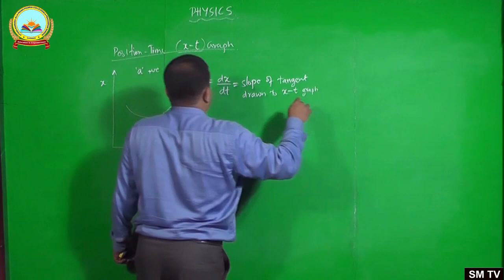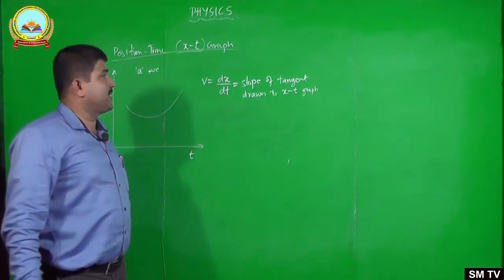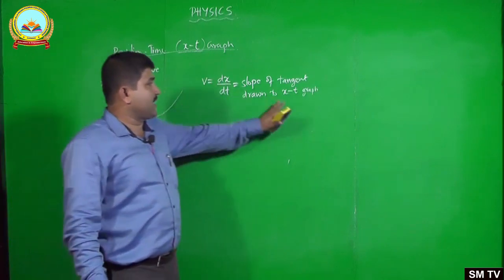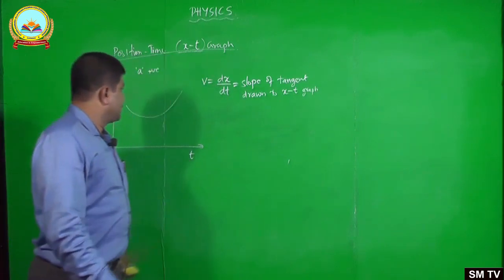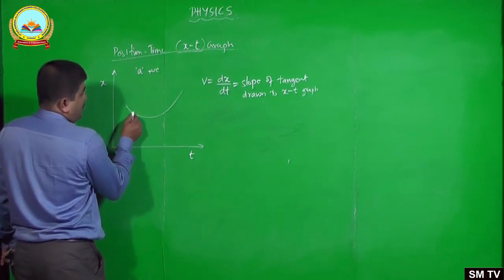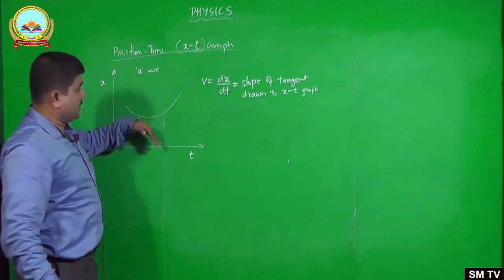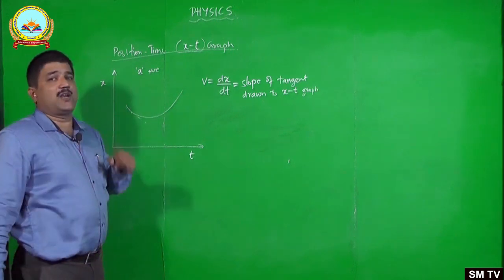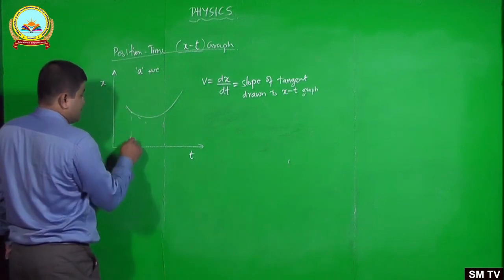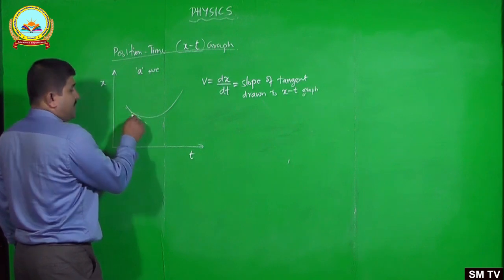If I have to define acceleration in terms of the velocity-time graph, acceleration equals dv/dt. Here, I take dx/dt as the slope of the tangent drawn to the XT graph. If I draw the tangent to this curve at a point, the slope of that line gives the instantaneous velocity at that instant of time. At this point the slope I said is negative.